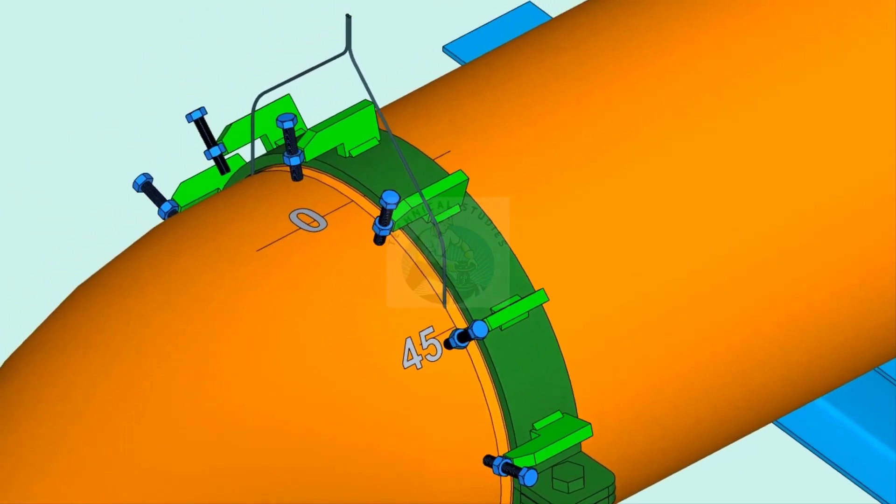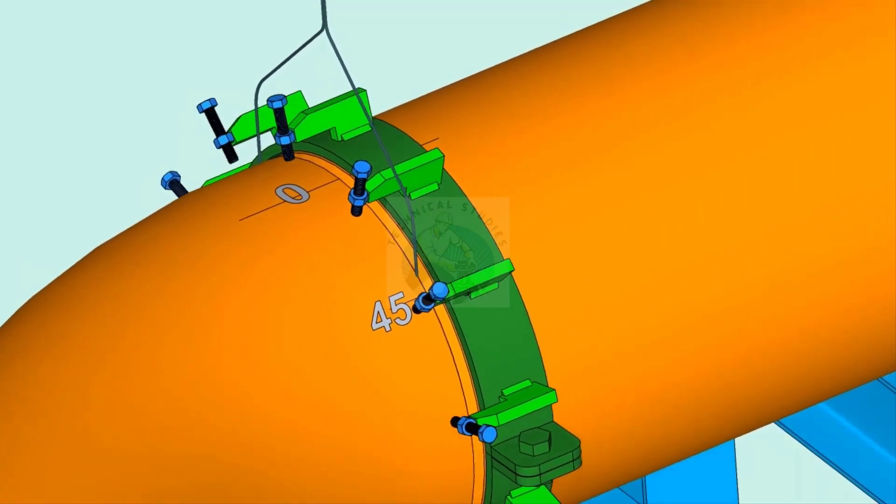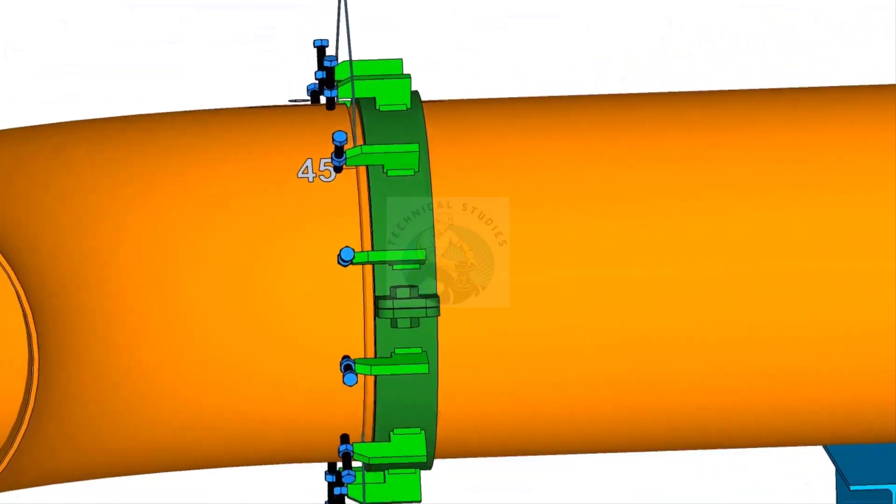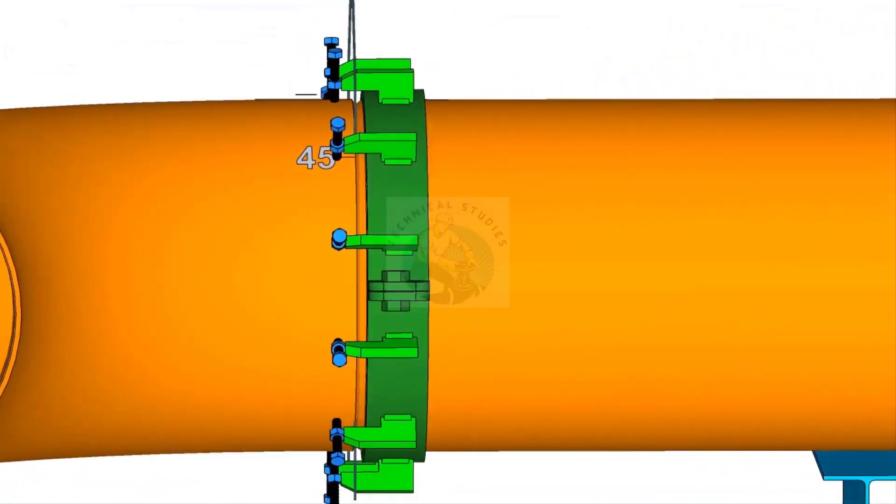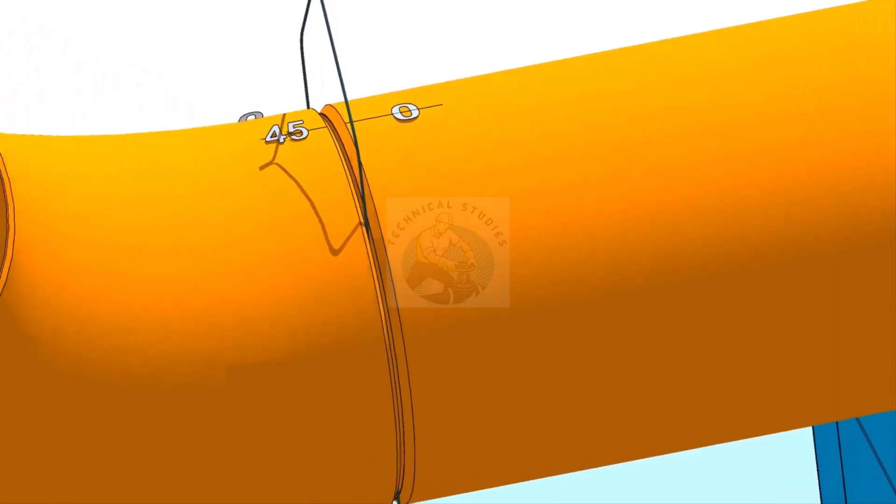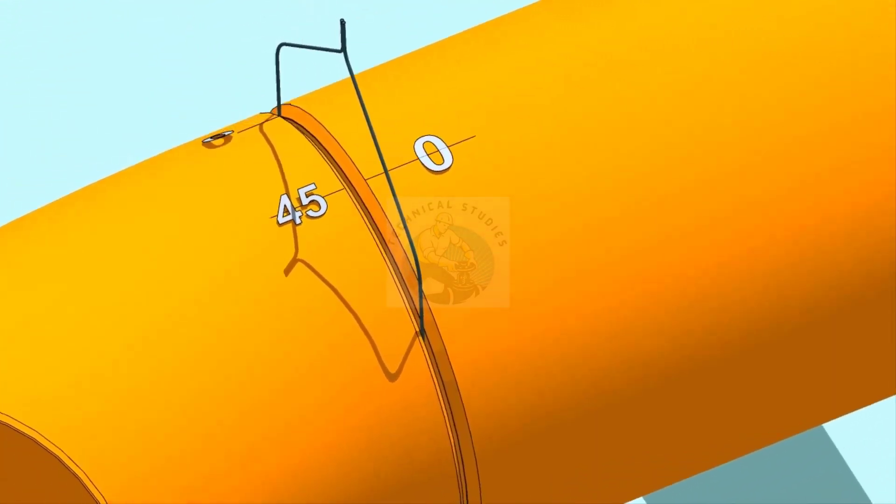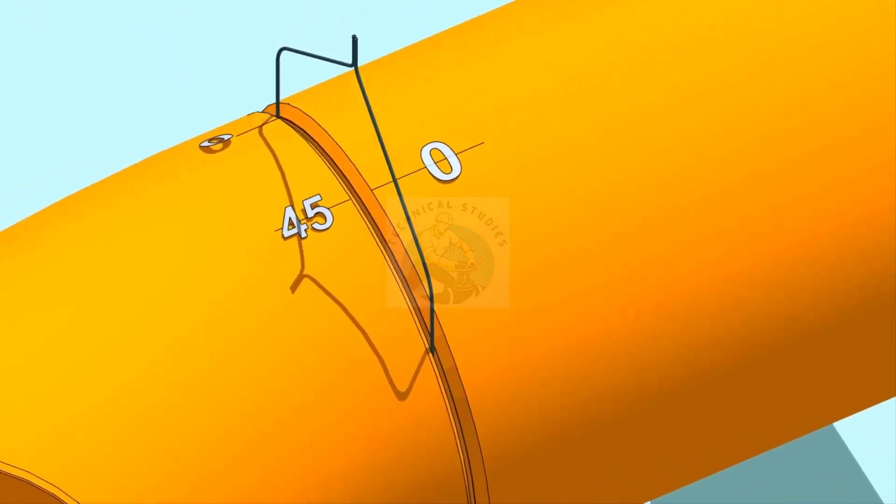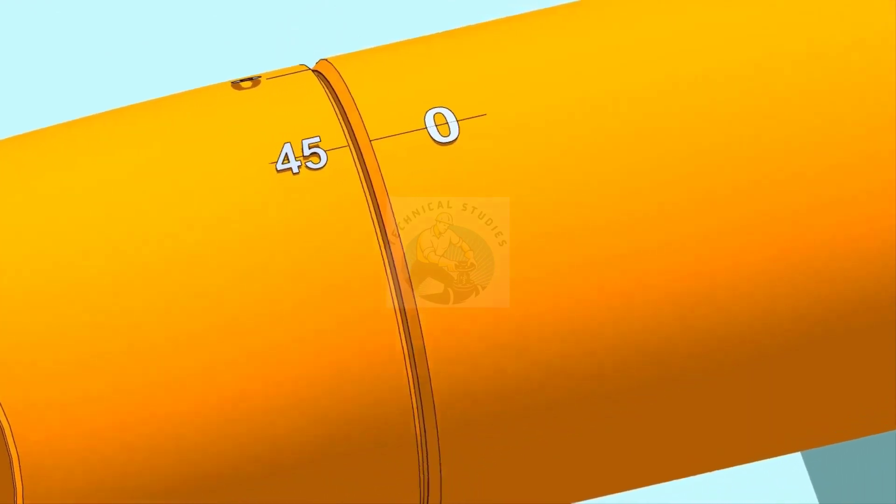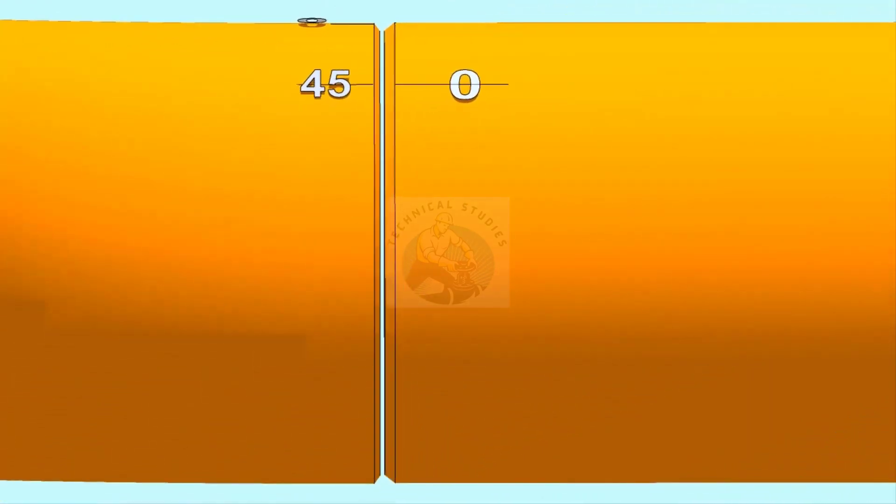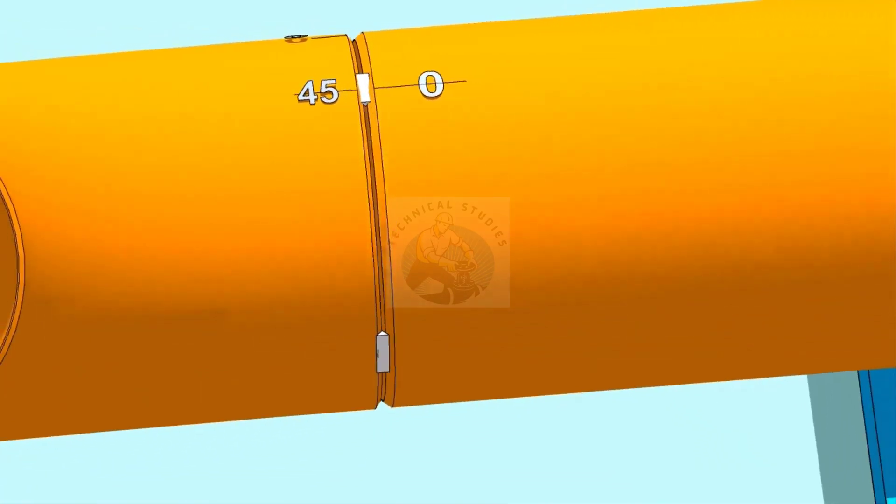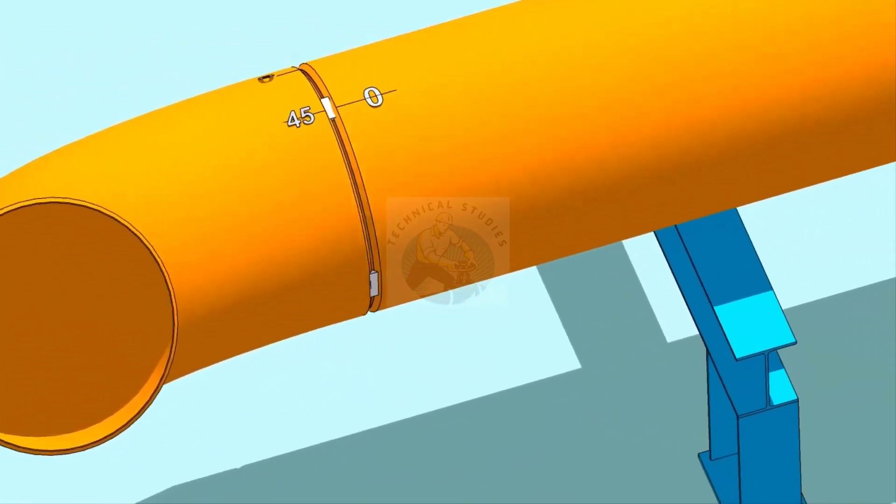Now, slowly rotate the elbow until the 45-degree mark comes opposite to the zero mark on the pipe. Make the joint gap equal all around the joint. Tack weld at the four quarters of the joint.